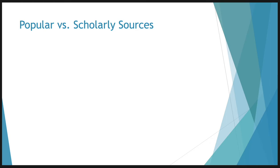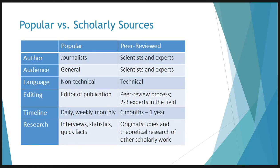Now, in addition to the levels of sources — primary, secondary, and tertiary — we have to think about how and where they're published. There are popular sources and scholarly sources. Popular sources are those produced for a general audience. They are usually written by journalists who are paid to go out and find information, write the information, and get it edited and published.